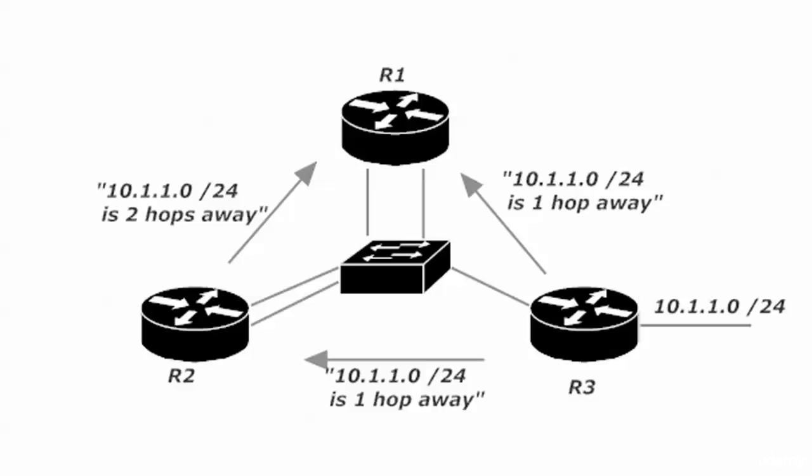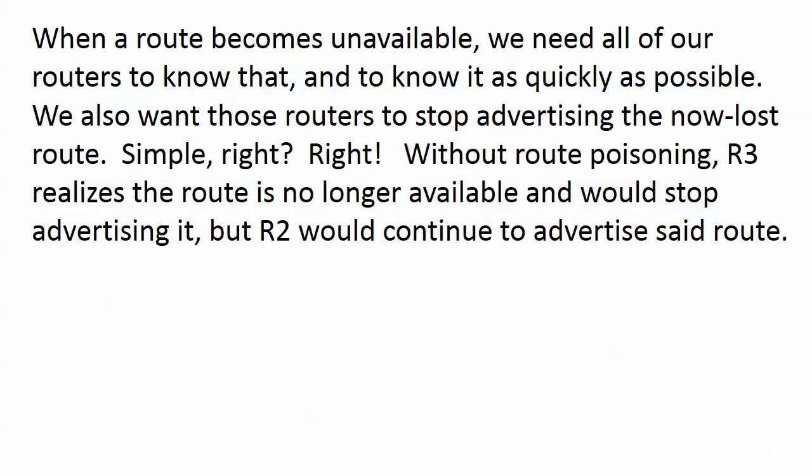Router 1 is hearing about 10.1.1.0/24 from two different sources. It's going to look at that and say the route is the same, but the metric is different — it seems faster to go through router 3 than through router 2. We love this redundancy, so if router 1 loses one path to 10.1.1.0/24, it has another one. Everything would be fine here, until that route goes away.